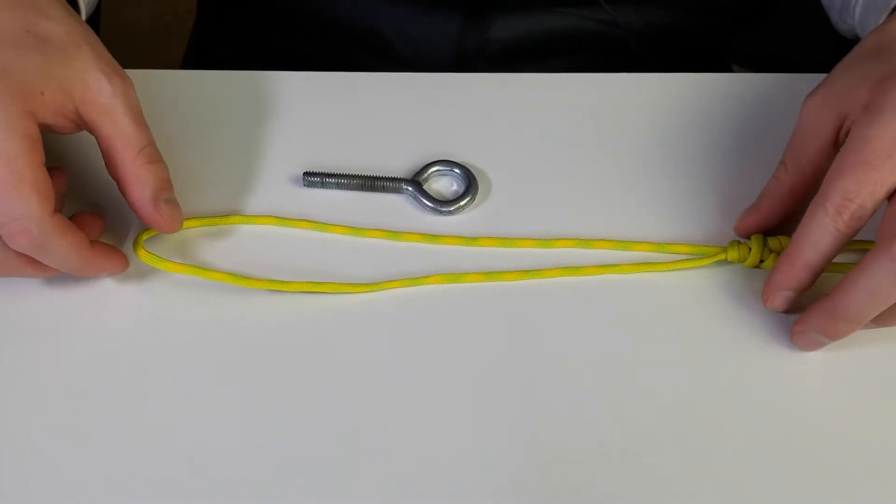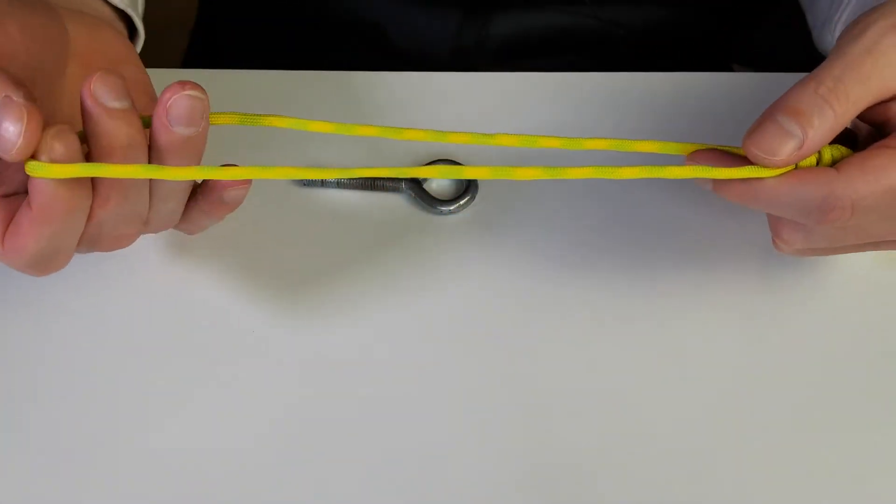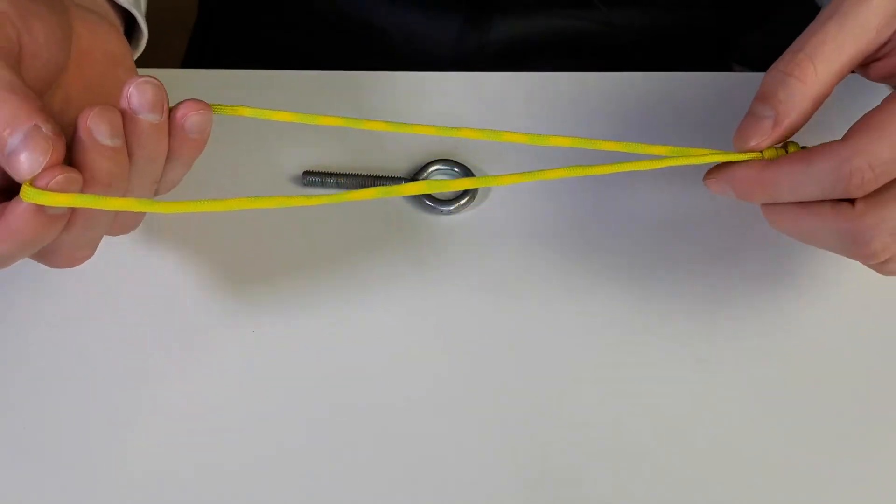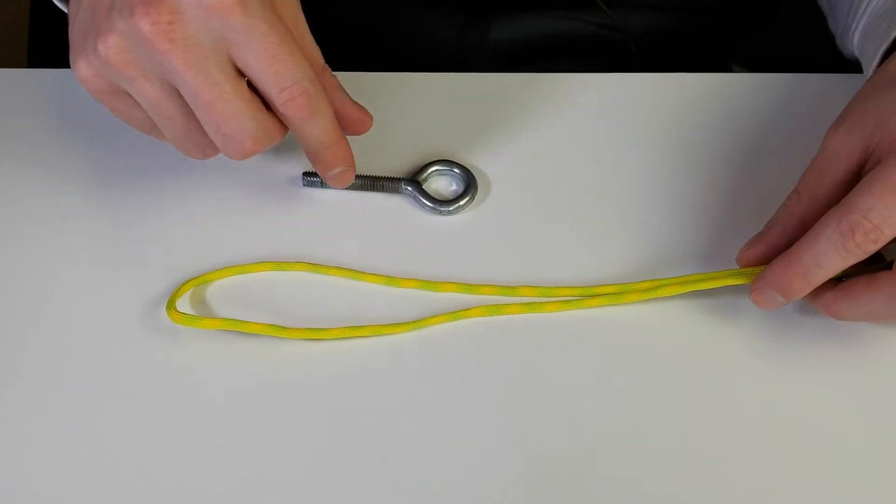You're going to need to have your line with a loop in it - whatever loop you want to tie. I generally use the Bimini twist, the link for that video is down below. You're going to need your line with a loop.